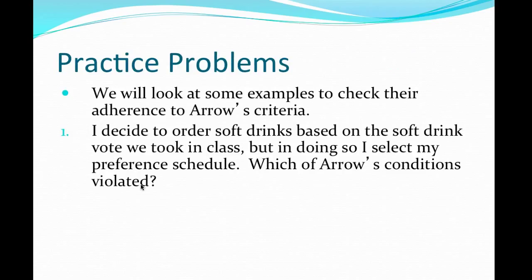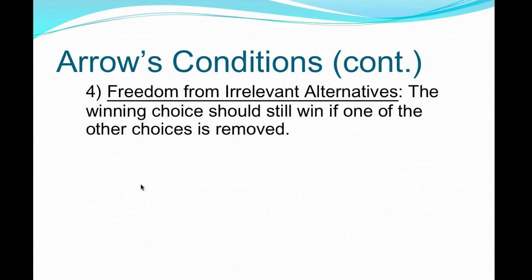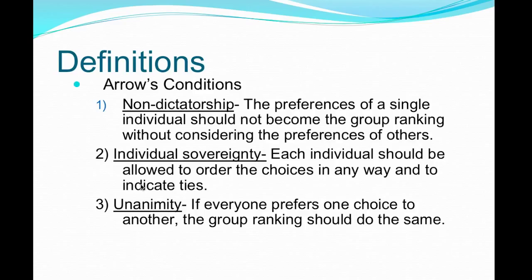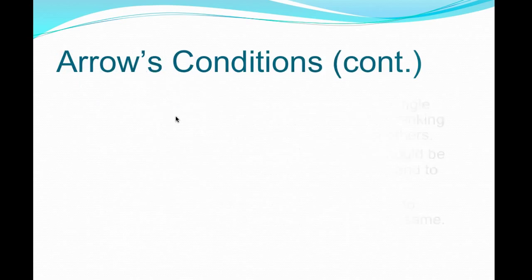For some practice problems: what if I decide to order soft drinks based on the soft drink vote we took in class, but in doing so I select my own preference schedule to do the ordering? Which of Arrow's Conditions is violated? If you look back, you can figure out that would be number one — a dictatorship. If you take the preferences based on just one person, that violates the non-dictatorship condition.